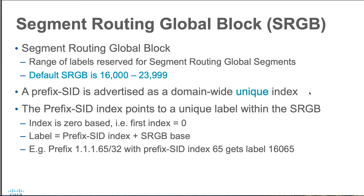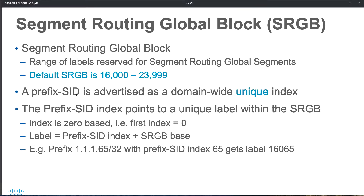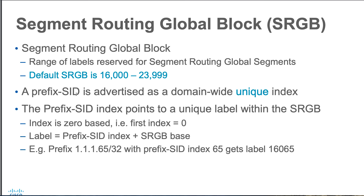In the last episode we looked at a sample topology with five routers. Each router was identified with a unique index: 1, 2, 3, 4, and 5. We were using sRGB base plus an index, which is why those were called the prefix SID. So each router had a prefix SID like 16,000, 1, 2, 3, and so on.